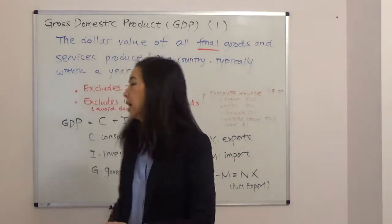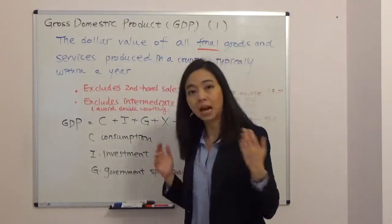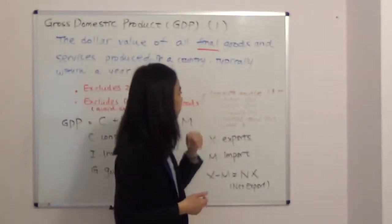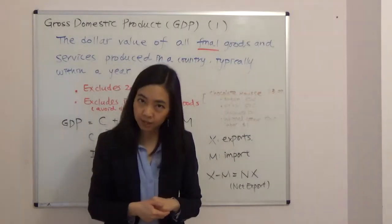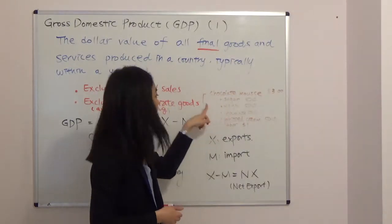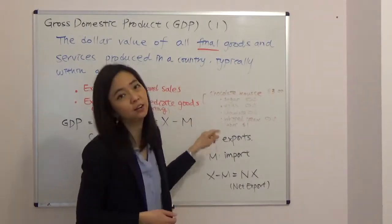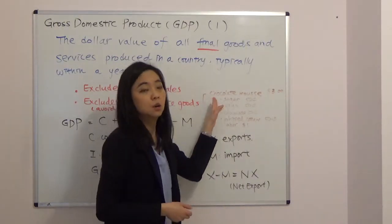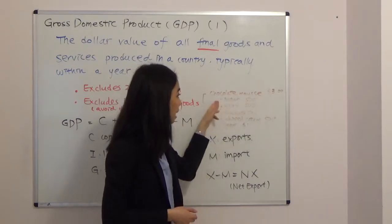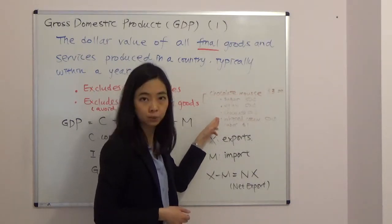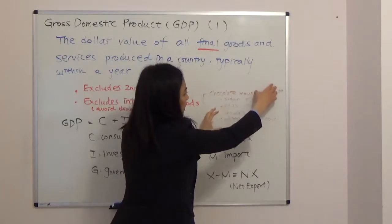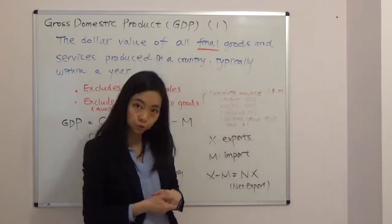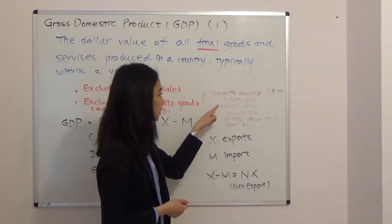We also only count final goods and services — we're not going to count intermediate goods. The idea is to avoid double counting. For example, if you buy chocolate mousse for three dollars, that price already includes the value of the ingredients: sugar, eggs, chocolate, and whipped cream, as well as the labor used to produce it. So we don't separately count those ingredients.